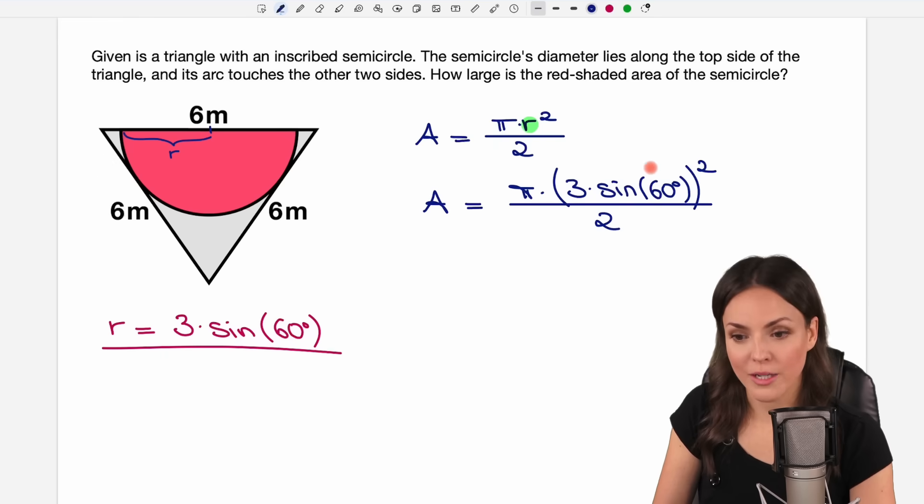Now you can put everything into your calculator and then get a result of 10.6. We had meters here everywhere. So we add squared meters for our area and we have solved this problem.